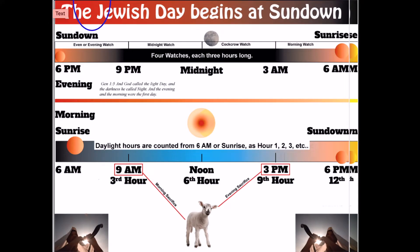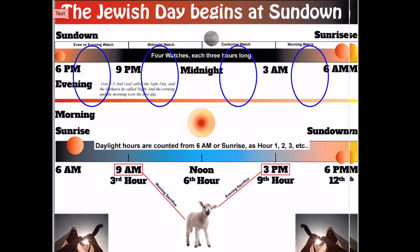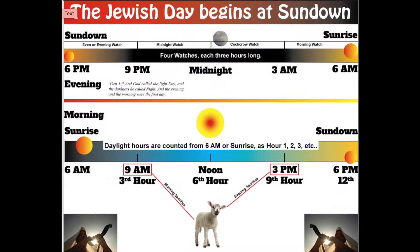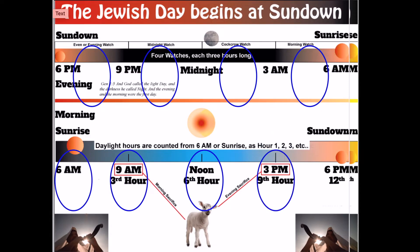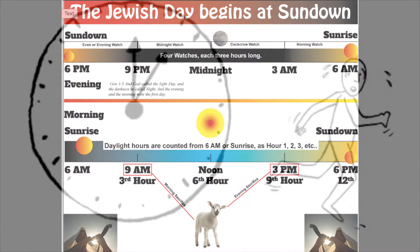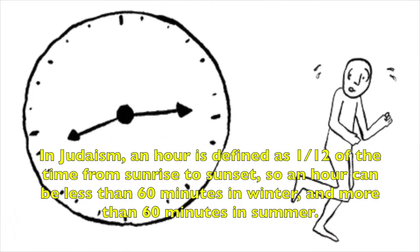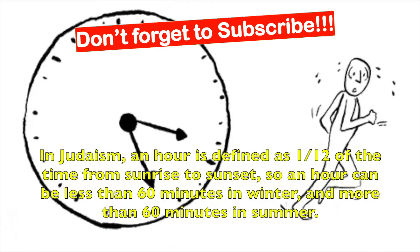In this diagram, we can see that from 6 p.m. to 9 p.m. is the evening watch that begins the new day. From 9 p.m. to 12 midnight is the midnight watch. From 12 midnight to 3 a.m. is the cock-crow watch. And from 3 a.m. to 6 a.m. is the morning watch. In the morning, 6 a.m. is sunrise, 9 a.m. is the third hour, 12 noon is the sixth hour, 3 p.m. is the ninth hour, and 6 p.m. is the twelfth hour — the beginning of another new day.